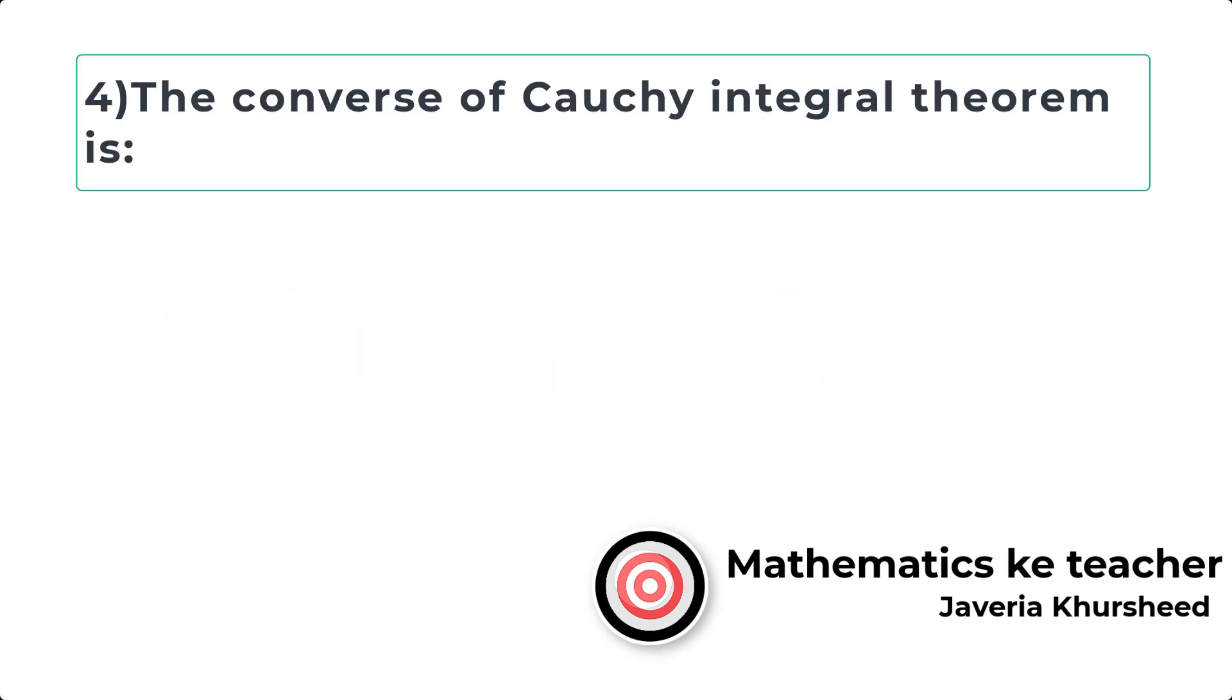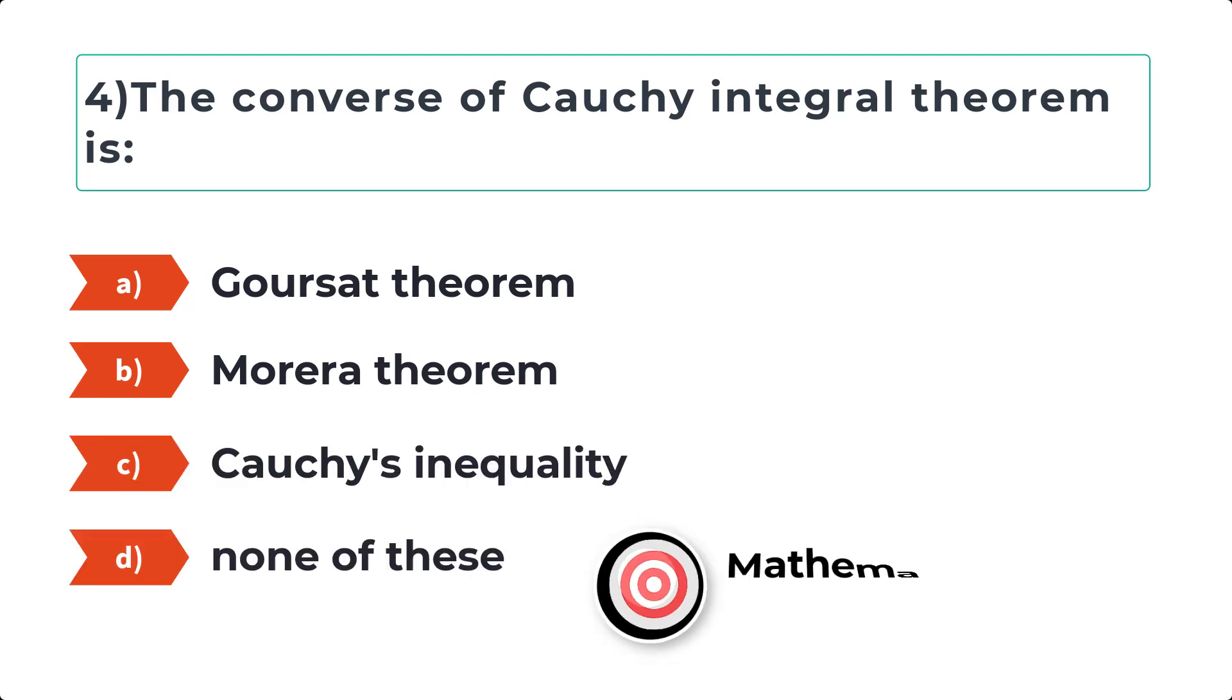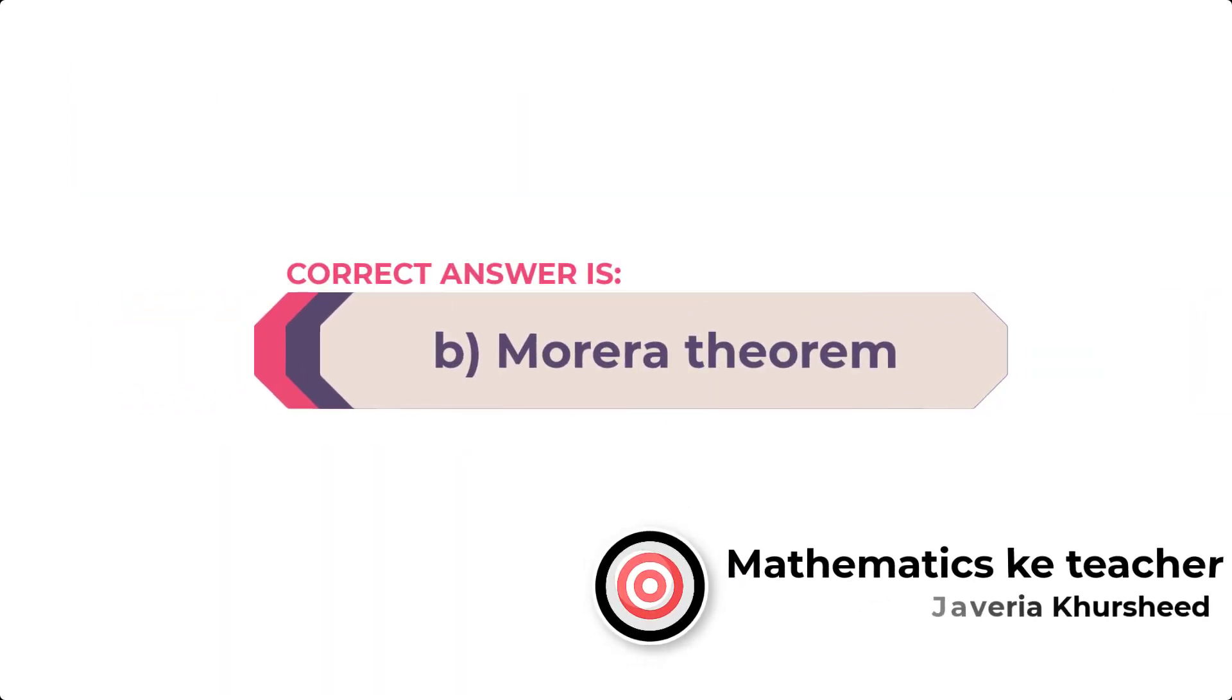Question 4: The converse of Cauchy integral theorem is: A) Gauss-Ursid theorem, B) Morera theorem, C) Cauchy's inequality, D) None of these. Correct answer is B, Morera theorem.